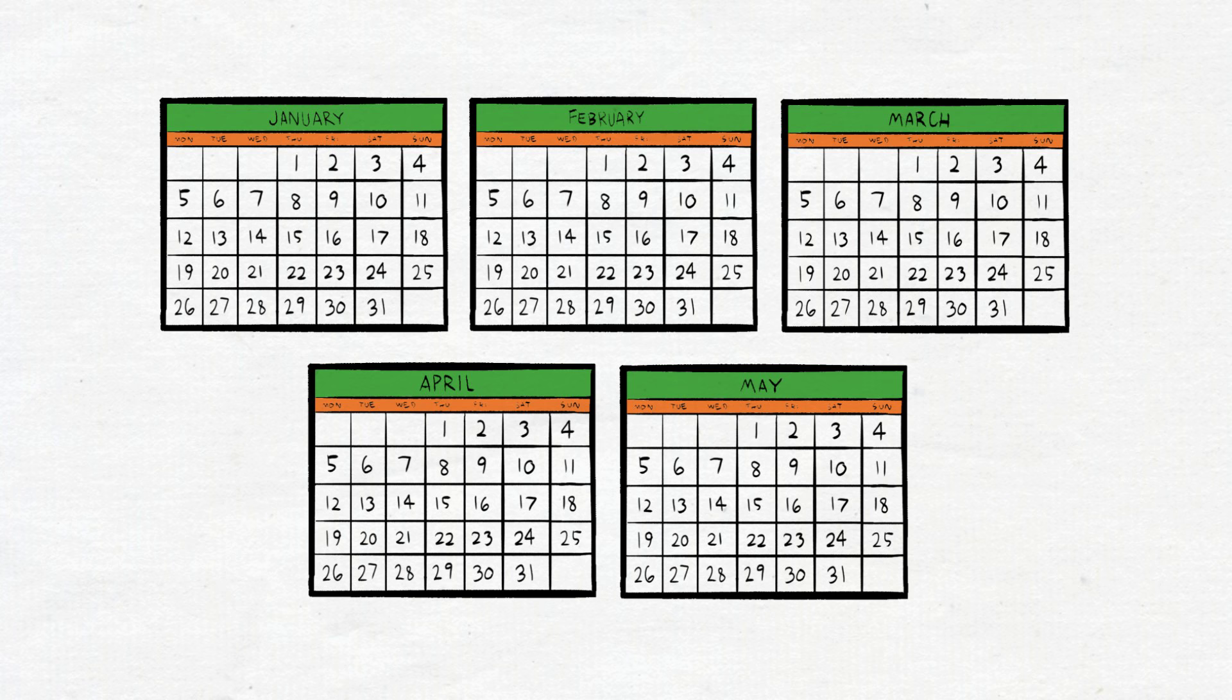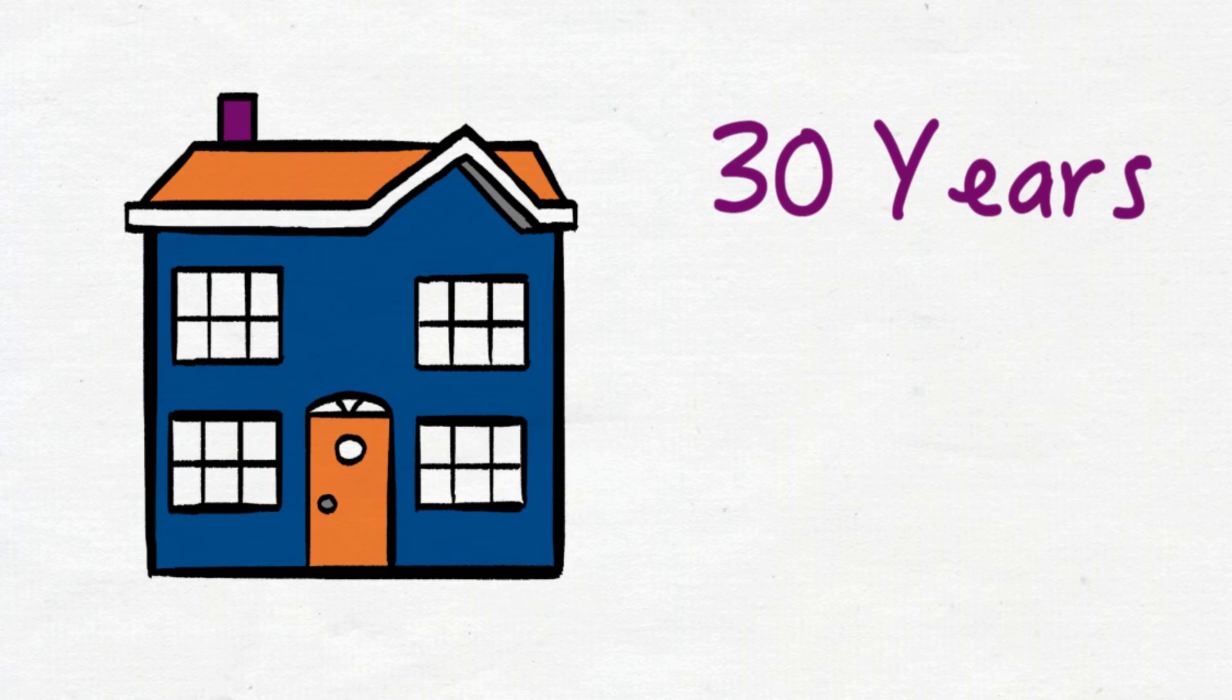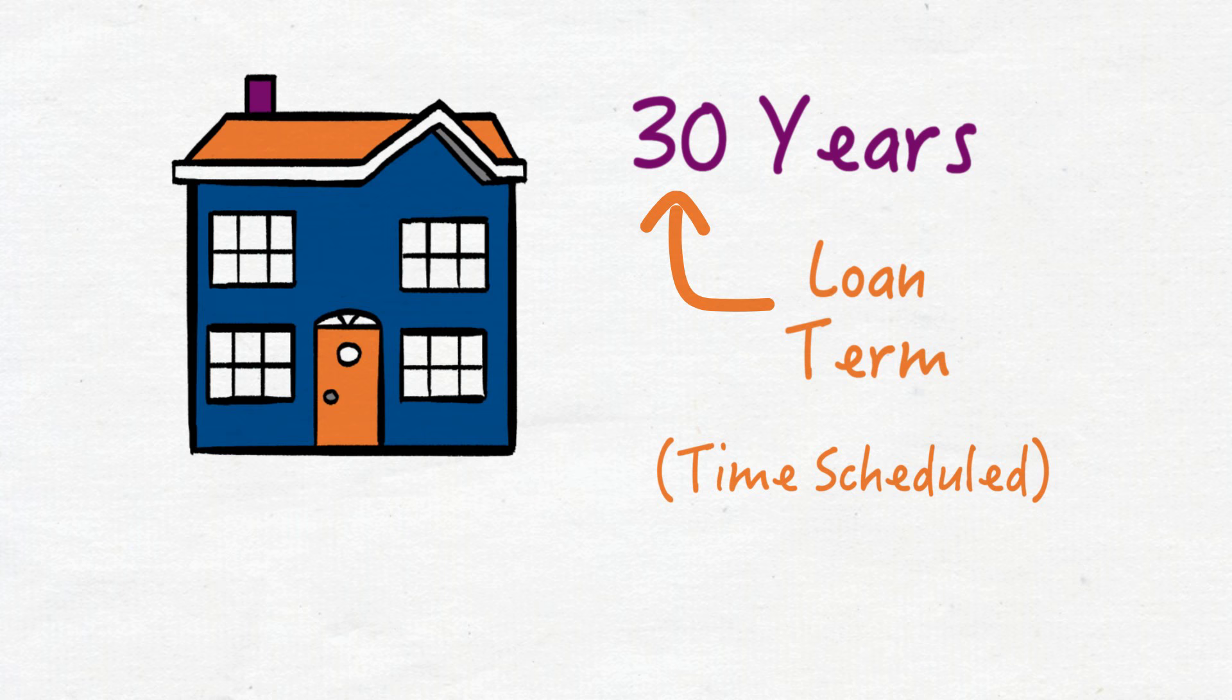Some loans are scheduled to be repaid over 5 months. Some loans are scheduled to be repaid over 30 years, like a mortgage or home loan. The loan term is the amount of time the lender schedules for repayment of the loan.